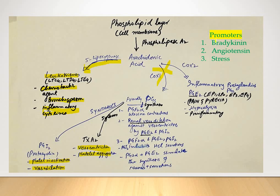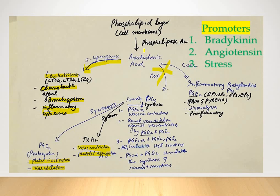A technical point to remember: there are certain promoters of phospholipase A2, namely bradykinin, angiotensin, and stress, so try to avoid stress. Regarding the inhibitors of phospholipase A2 — steroids are the inhibitors. Once we give steroids, neither the left nor the right pathway will be active, meaning arachidonic acid will not be synthesized. Therefore, steroids are very good drugs for management of asthma as well as for anti-inflammatory purposes.